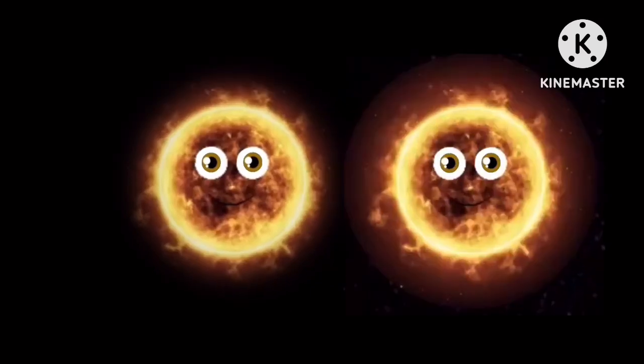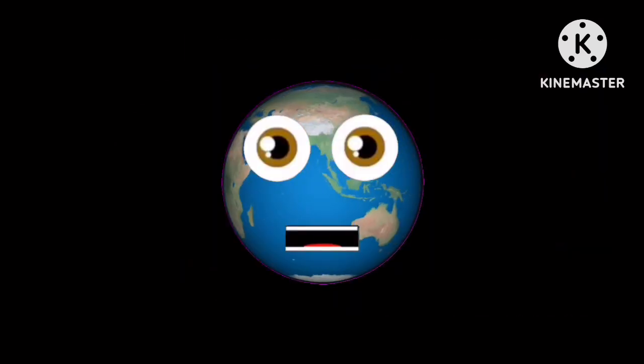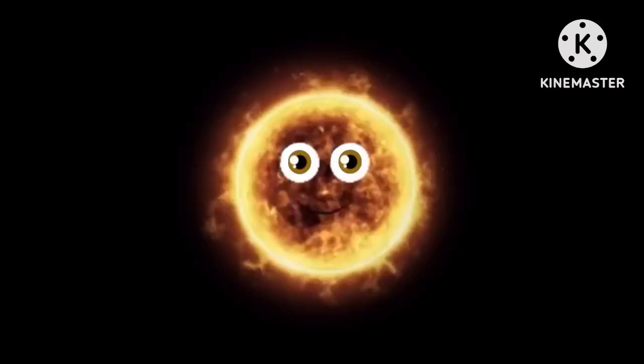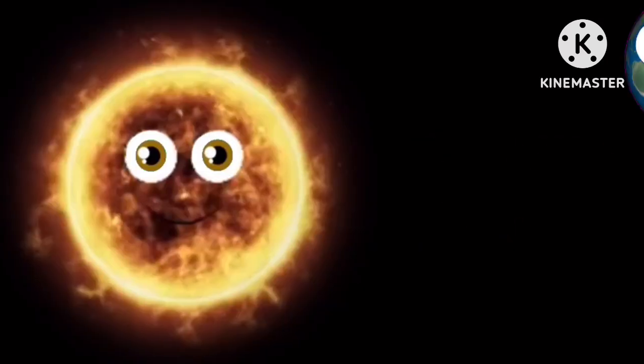If the sun was replaced by a binary star system, what would happen to the Earth? If one of these stars were bigger than the other, its gravity would pull the Earth in and the Earth would not recover.